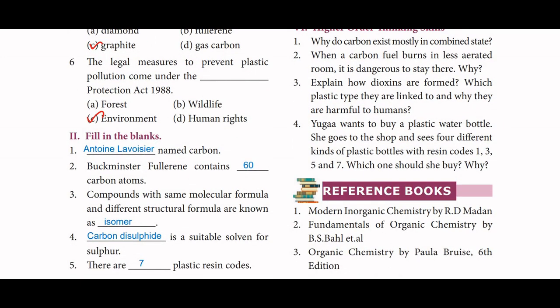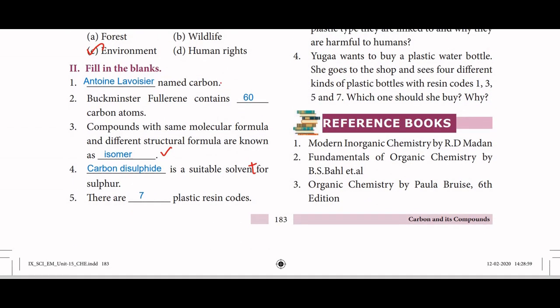Fill in the blanks: Anthony Lavoisier named carbon. Buckminster Fullerene contains 60 carbon atoms. Compounds with the same molecular formula and different structural formula are known as isomers. Carbon disulfide is a suitable solvent for sulphur. There are 7 plastic resin codes.